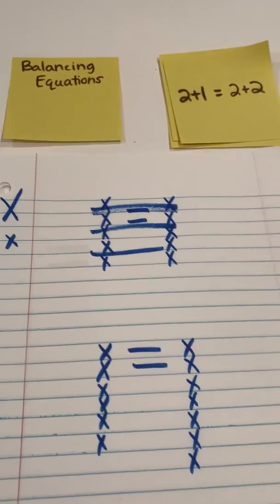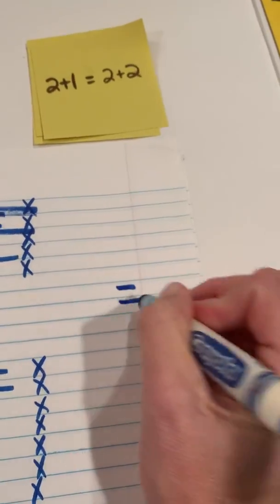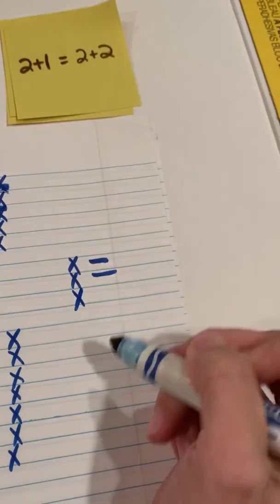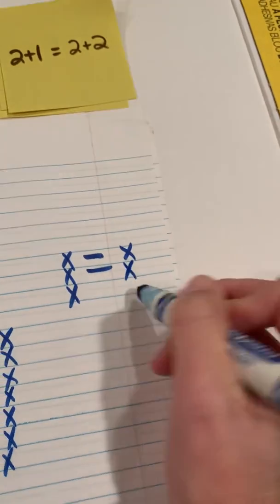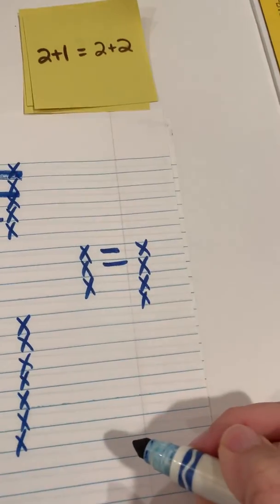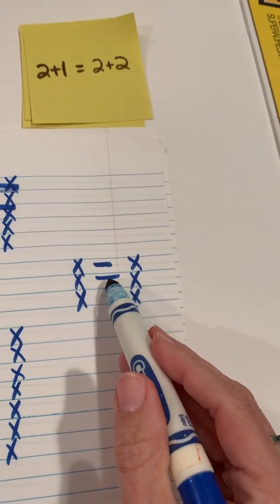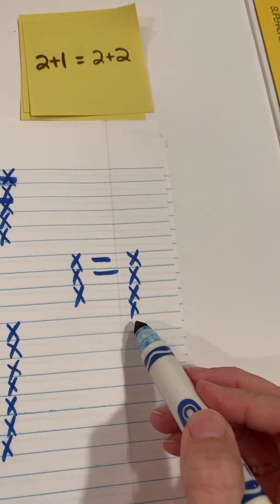So 2 plus 1. I'm going to put my equal sign. So 2 plus 1, and I'm going to represent 2 plus 2 more. And you can see that is false. 2 plus 1, which is 3, is not the same or equal to 2 plus 2, which is 4.